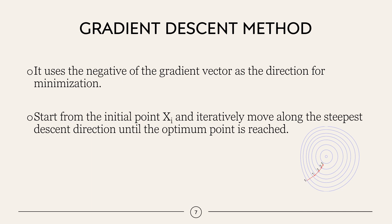Gradient descent method. It uses the negative of the gradient vector as the direction for minimization, and if you want to calculate the maximization then you have to use the positive gradient. Starting from the initial point, initial point can be anything that you can assume, and iteratively move along the steepest descent direction until the optimum point is reached.